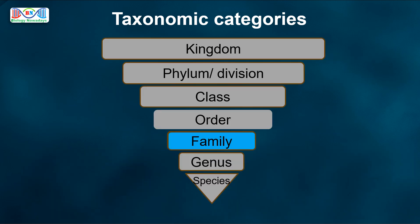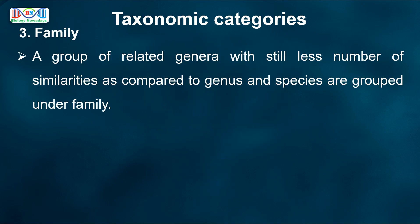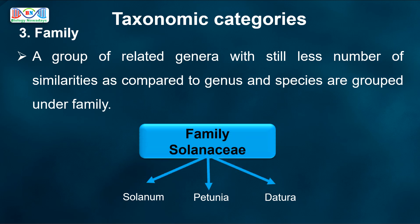Next higher category is Family. A group of related genera with still fewer similarities, as compared to genus and species, are grouped under a family. Among plants, for example, three different genera — Solanum, Petunia and Datura — are placed in the family Solanaceae, otherwise called the Nightshade family. Solanum, Petunia and Datura share some common morphological characteristics to be included in the Solanaceae family.